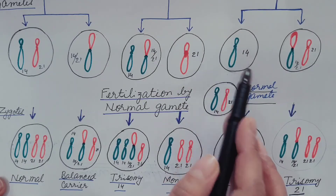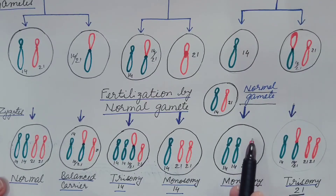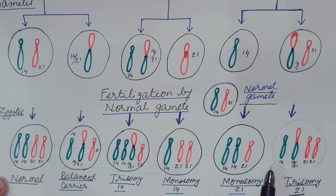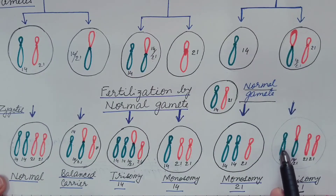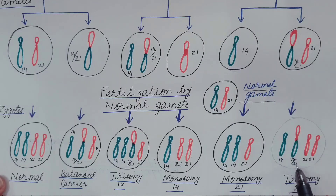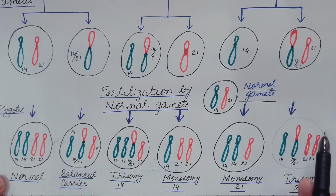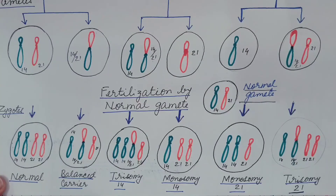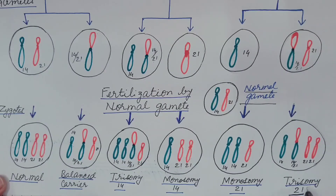If the normal gamete fuses with the fifth gamete, there will be two copies of chromosome 14 but only one copy of chromosome 21 — this is monosomy 21. If the normal gamete fuses with the sixth gamete, there will be one copy of normal chromosome 14, two copies of normal chromosome 21, and one copy of 14-by-21, resulting in two copies of chromosome 14 and three copies of chromosome 21. This extra copy of chromosome 21 gives 47 chromosomes total — this is trisomy 21, which leads to Down syndrome.